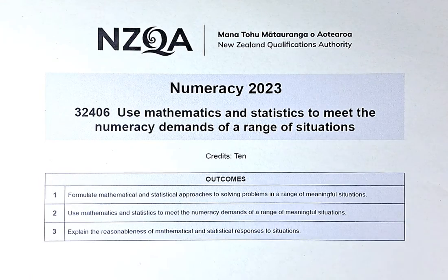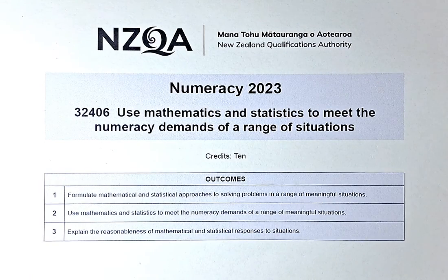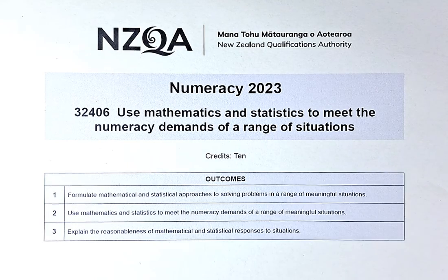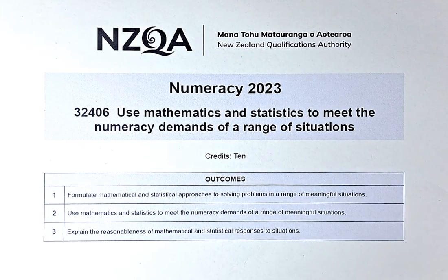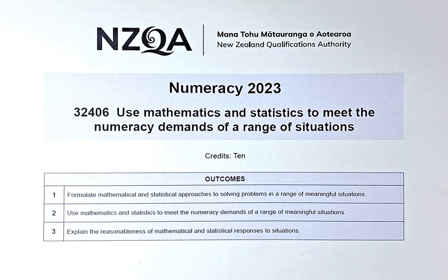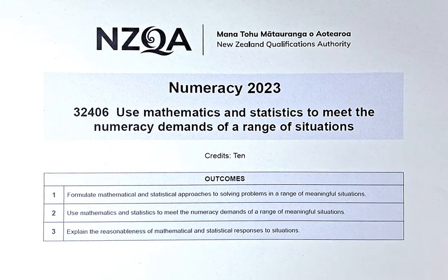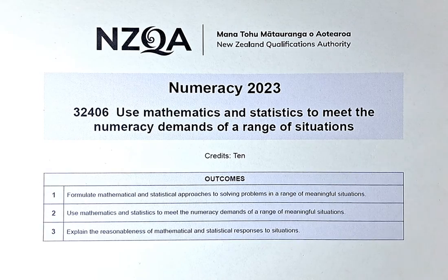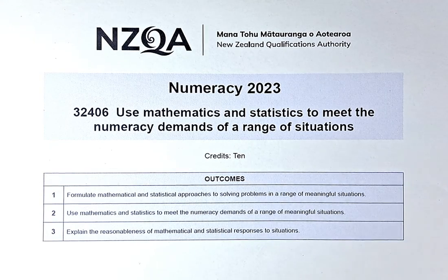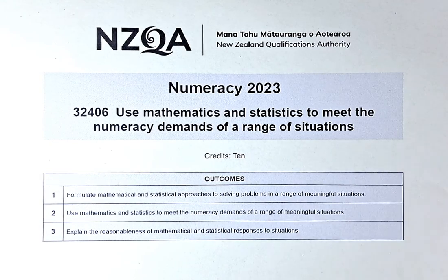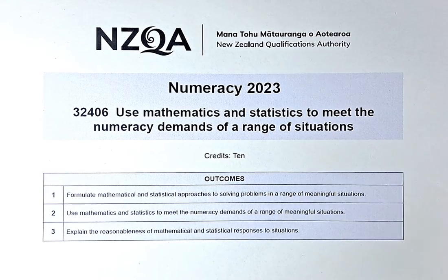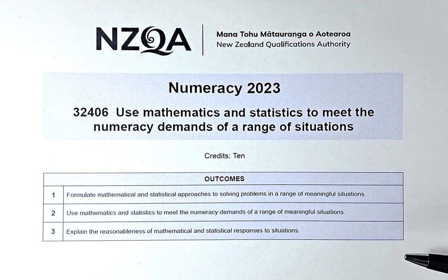Good day! In this video, we are going to solve questions 1A to 1C of the June Numeracy Paper 2023. The title of this paper is Use Mathematics and Statistics to Meet the Numeracy Demand of a Range of Situations. The paper number is 32406.